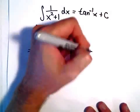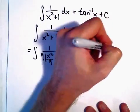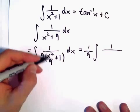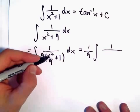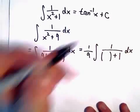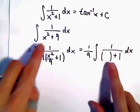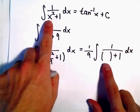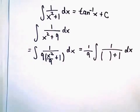I'm going to just pull the 9 out front. So there's our 1 ninth. And then we would have 1 over x squared over 9. And I'm going to rewrite that because what I'm really going to do is a little substitution. I would like to have a single variable squared is what I would like to have.